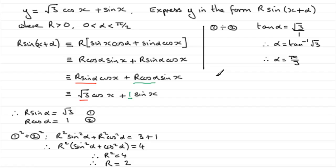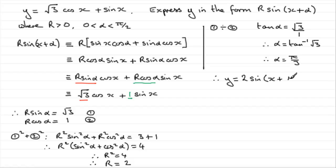So at the end of the day, by this method we have y equals r sine of x plus alpha, where r is 2 and alpha is pi over 3 — giving y equals 2 sine of x plus pi over 3. But this is quite a lot of work for just four marks.